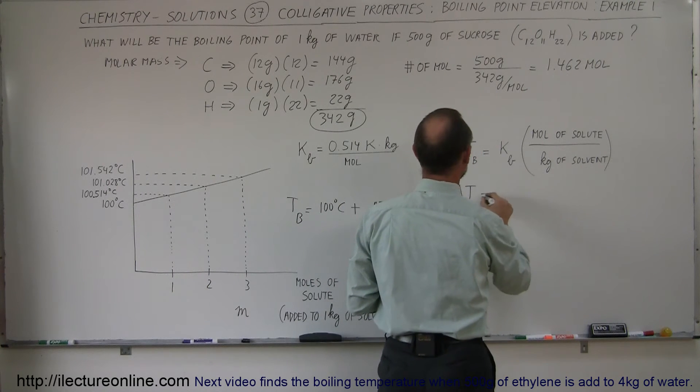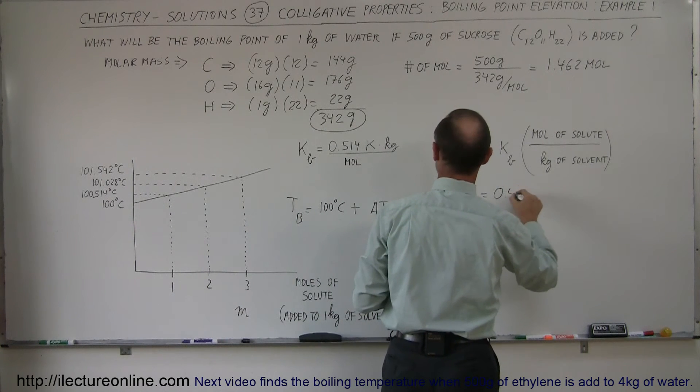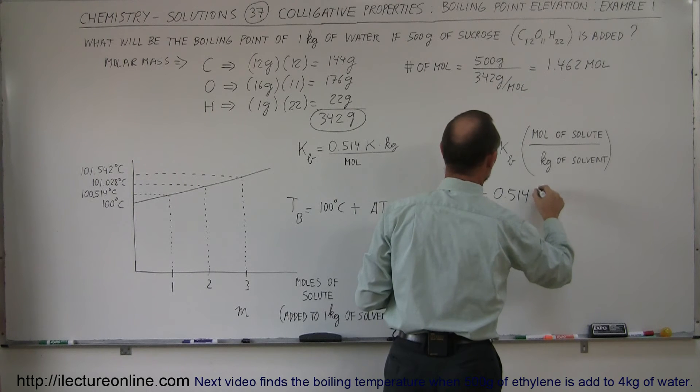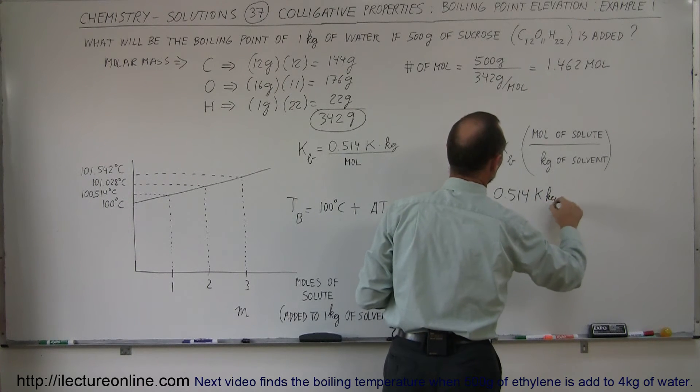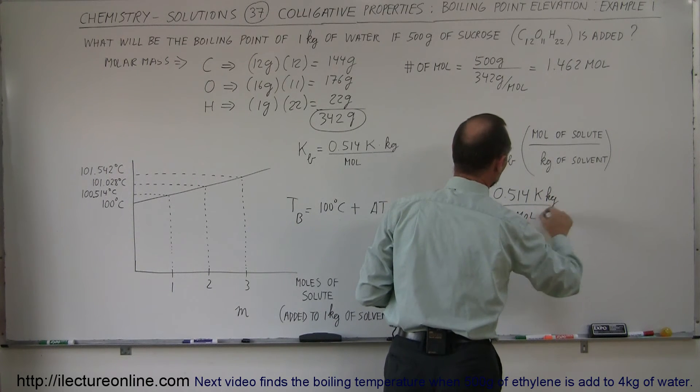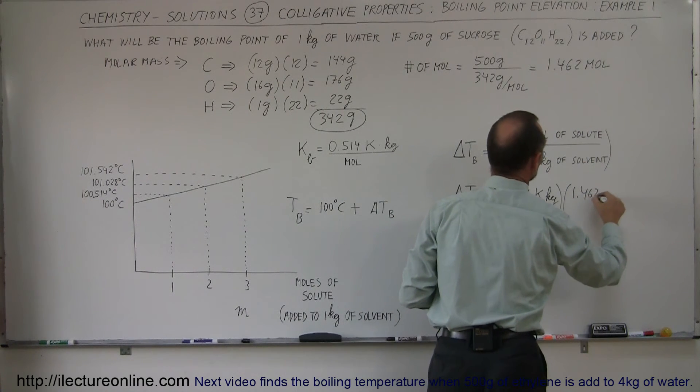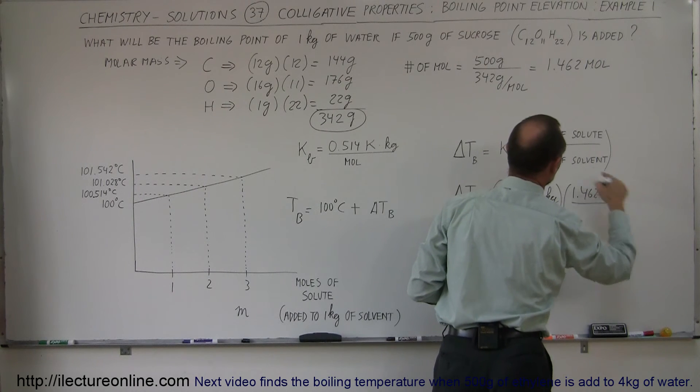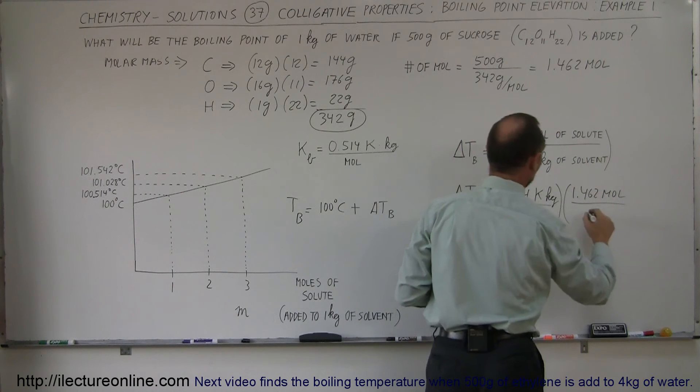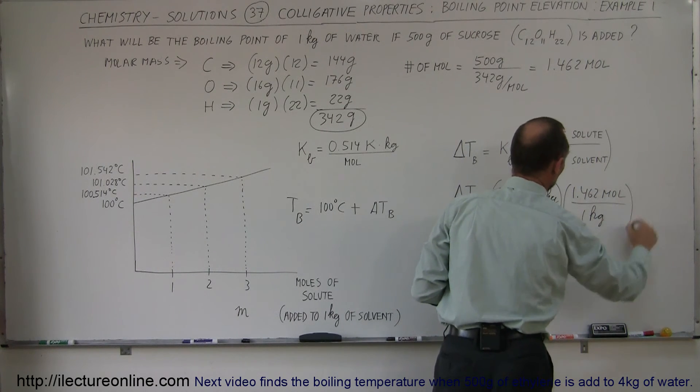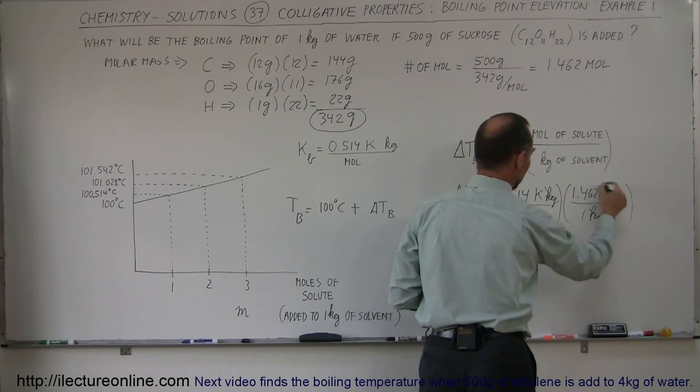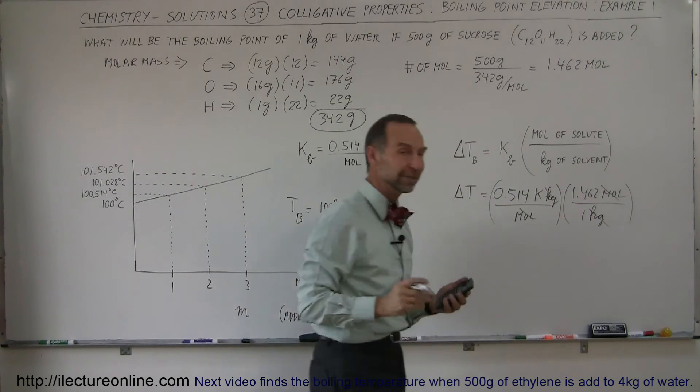So that's going to be equal to the constant 0.514 Kelvin times kilogram per mole. We multiply times the number of moles of the solute, which we found to be 1.462 moles, and the number of kilograms of the solvent, which in this case we used 1 kilogram. Notice that the kilogram cancels out, the moles cancels out, and we're left with Kelvin.